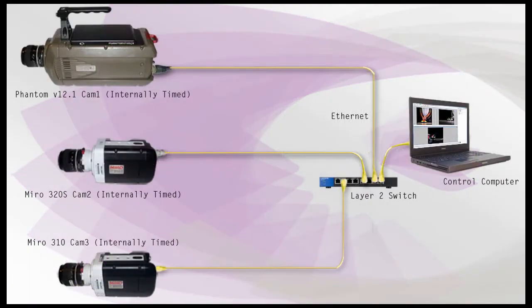The first, and probably the most common method used, is internally timed. Although multiple phantom cameras have been networked together in previous tutorials, the cameras were never synchronized. Essentially, they have been stand-alone cameras controlled by a single application, the PCC software. Although the graphic only shows three cameras, I can use this method to clock up to 63 cameras. The only requirement is I need to connect the cameras to the control computer through an Ethernet hub, or layer 2 switch, formerly known as a repeater.